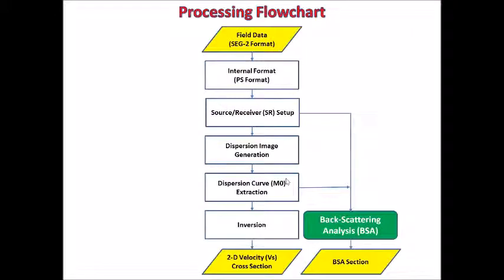This is a processing flow chart for backscattering analysis. First, you have to prepare a seismic dataset with the source receiver configuration encoded. Then you have to prepare dispersion curves. You can either prepare one dispersion curve that can represent average dispersion curve for the entire dataset.